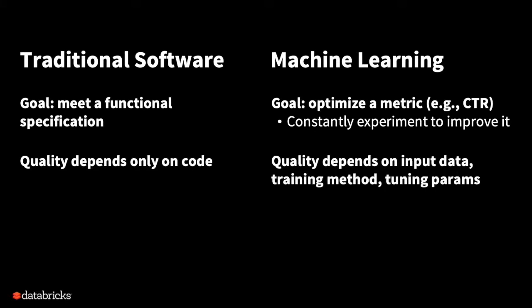The second difference is that in traditional software, the quality depends mostly on the code — that's what determines whether you meet the functional spec. In machine learning, by definition, algorithms generalize from data, so quality depends heavily on the input data. It also depends on other parameters such as the training method you use, tuning parameters, and so on.